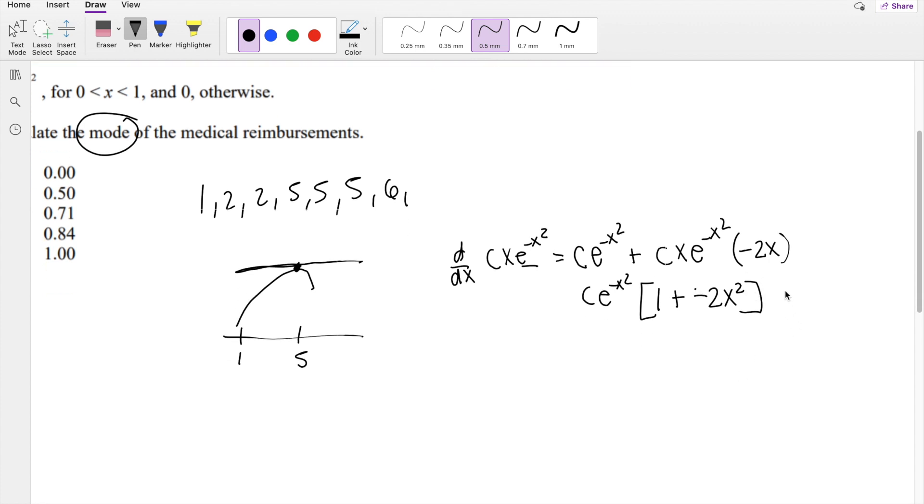So then I can set it equal to 0 to see where the mode is. So I can set this equal to 0. This one's going to be 1 equals 2x².